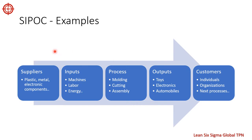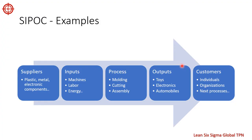The suppliers in this case might include the raw materials needed to make the product, such as plastic, metal, or electronic components. The inputs could include things like machines, labor, or energy. The process would involve the various steps required to transform the raw materials into a finished product, such as molding, casting, and assembly. The outputs would be the finished products themselves, which could be anything from toys and electronics to automobiles. Finally, the customers would be the individuals or organizations who purchase the finished products.